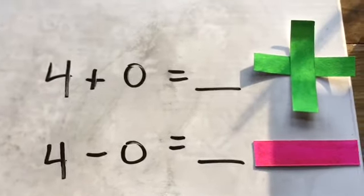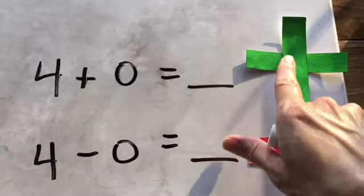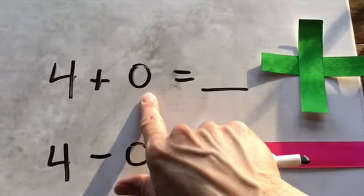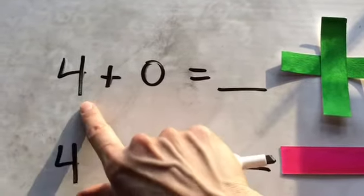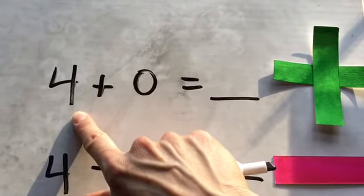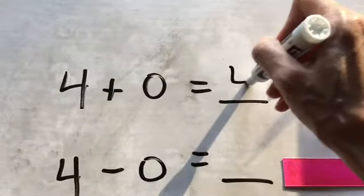Okay, let's take a look at these before you try your practice page. So if we're adding, with the plus sign, remember we add. If we're adding zero, does it change what we have? If I have four donuts and my friend gives me zero, how many do I still have? I still have four. So four plus zero is four.